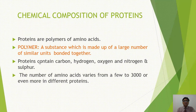Number of amino acids varies from a few to 3000 or even more in different proteins। यानि different proteins में number of amino acids vary करते हैं। Example लेंगे insulin की - यह सबसे small protein है। Insulin के one molecule में सिर्फ 51 amino acids हैं। इसी तरह hemoglobin के one molecule के अंदर 574 amino acids हैं। तो different proteins में number of amino acids vary करते हैं।